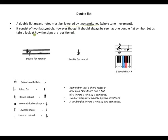A double flat means the note must be lowered by two semitones — a whole tone movement. It consists of two flat symbols, but should always be seen as one double flat symbol. On the keyboard, G double flat means moving from G, passing G flat, down to F — a whole tone movement.